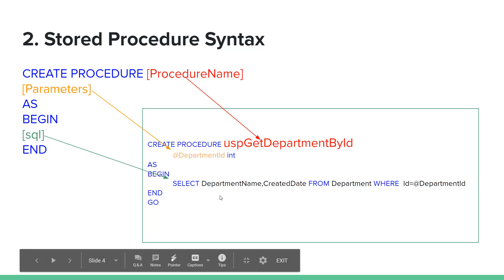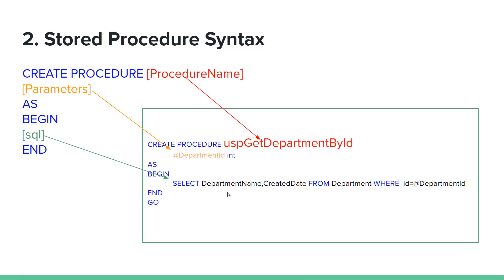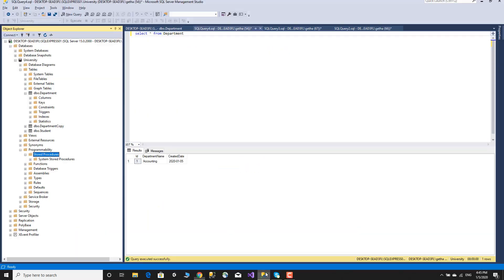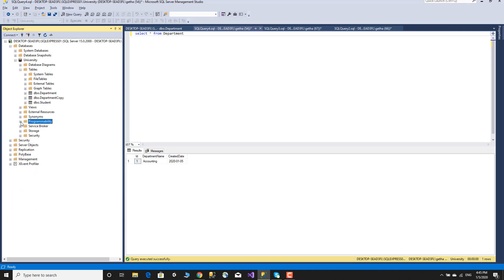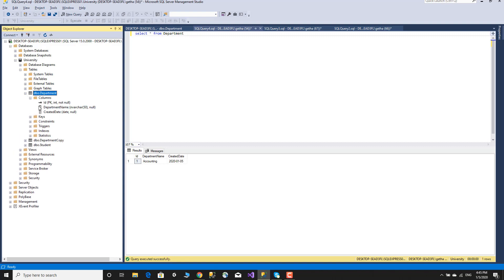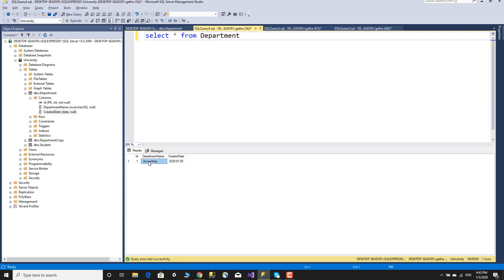This store procedure returns a record from the department table filtered by ID. So in the naming convention, store procedures that are user-defined use USP which stands for user-defined store procedure. The query is get department by ID, returning the department ID and department name.